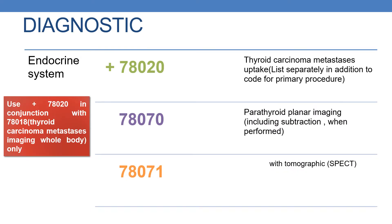The next code is an add-on code: plus 78020. It deals with thyroid carcinoma metastasis uptake, listed separately in addition to the code for the primary procedure. Use plus 78020 in conjunction with 78018, thyroid carcinoma metastasis imaging whole body. So in addition to 78018, you need to add plus 78020.